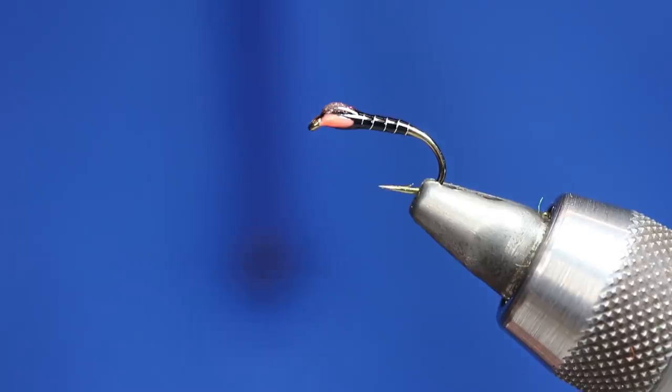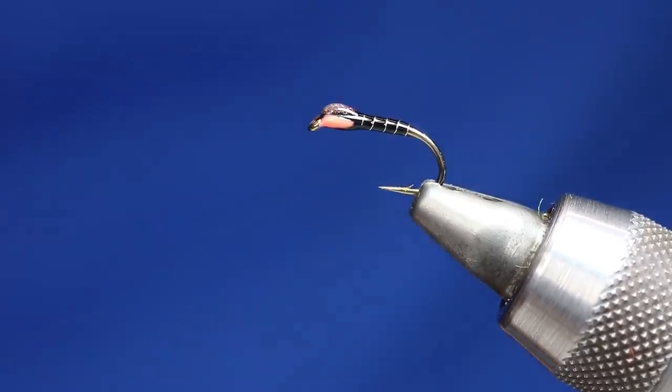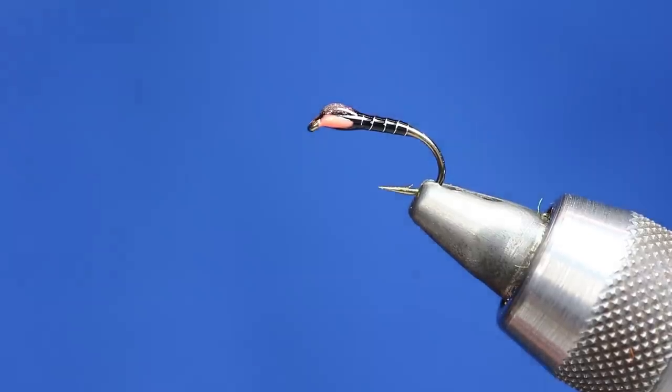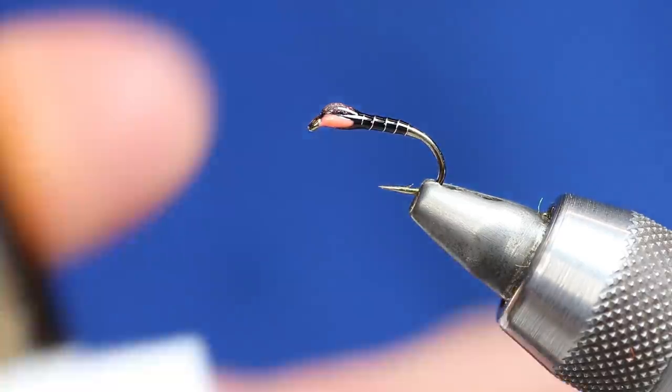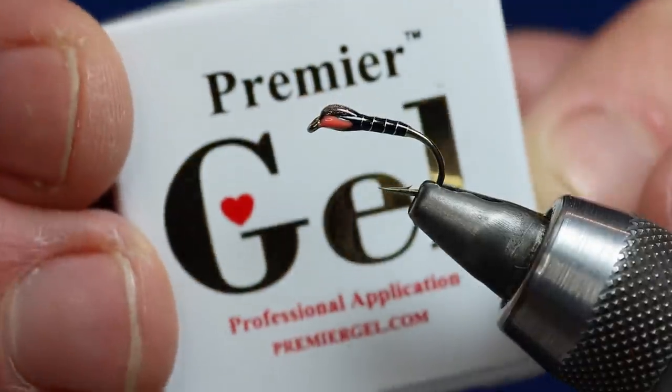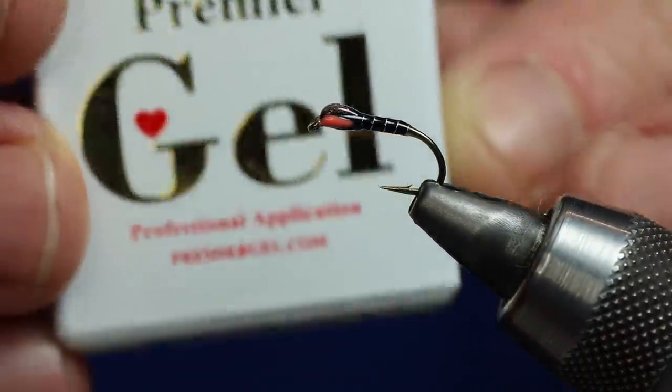So I really hope you enjoyed that one and I hope you're going to let your mates know about it. The flies will be available on my website later tonight. The materials, as I say, it's just black sheer thread and silver Veniard's wire, and that's the resin, UV resin company.